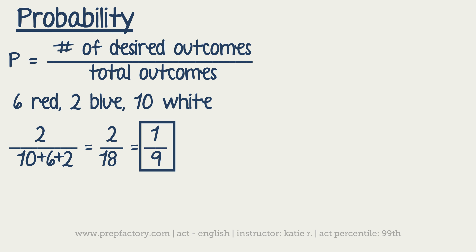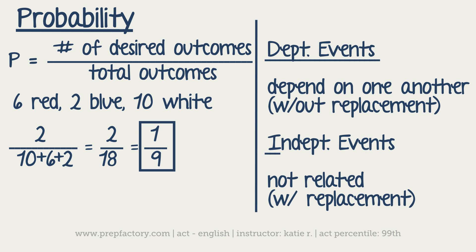The next thing to know about it is what to do when you have separate events happening, either at the same time or one after the other. So there's two kinds of events: dependent and independent events. Okay, so dependent events, name sounds pretty logical. They depend on one another. So without replacement, that's going to always tell you it's a dependent event.